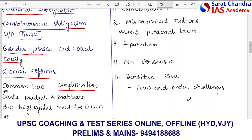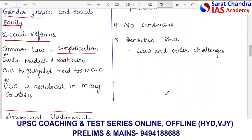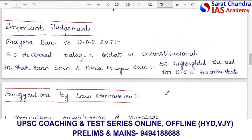Regarding important Supreme Court cases on UCC: In Shaira Banu versus Union of India (2017), the Supreme Court declared talaq-e-bidat as unconstitutional. In the Shah Banu and Sarla Mudgal cases, the Supreme Court highlighted the need for UCC throughout the entire country. These are the key cases we can cite when discussing Uniform Civil Code.